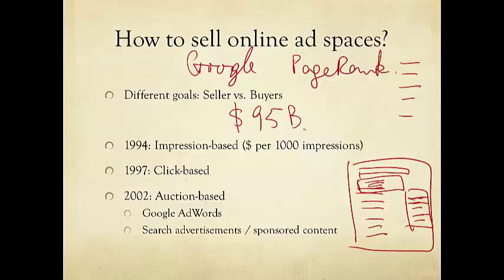In this ecosystem, there are sellers, for example, Google, and there are buyers, which are the advertising companies. Back in the early days of the web, for example, around 1994-95, advertisements on the web were sold on an impression-based mechanism.